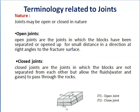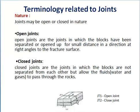Now there are some terminologies used to define joints. On the basis of nature, joints may be open or closed. Open joints are joints in which blocks have been separated or opened up for a small distance, as seen in this diagram. JT1 is an open joint which is opened up for a smaller depth in the rocks, and this opening is in a direction at right angle to the fractured surface.